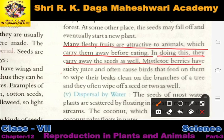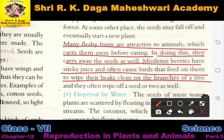Mistletoe berries have sticky juice and often cause birds that feed on them to wipe their beaks clean on branches of trees, and they often wipe off a seed as well. Mistletoe berries ka jo juice hota hai woh bahut sticky hota hai, aur kuch birds jo us berry ko khate hain woh use ek jagah se dusri jagah displace karte hain.